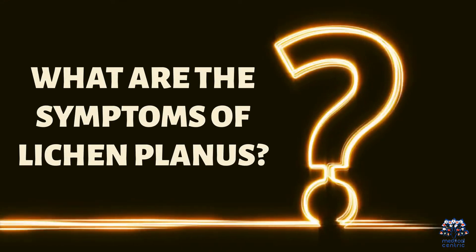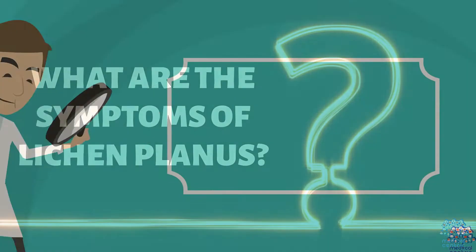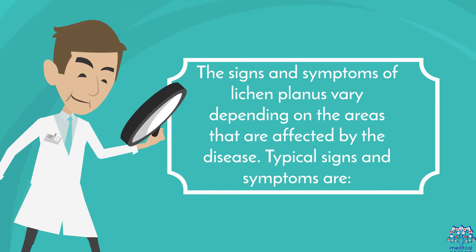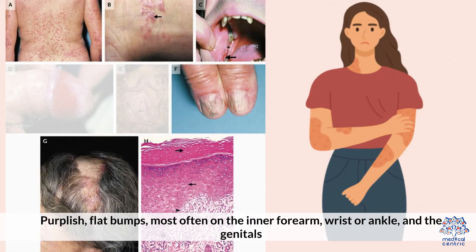What are the symptoms of Lichen Planus? The signs and symptoms vary depending on the areas affected by the disease. Typical signs and symptoms include purplish flat bumps, most often on the inner forearm, wrist, or ankle, and the genitals.